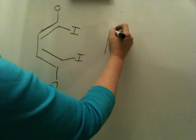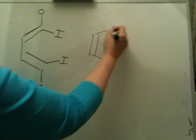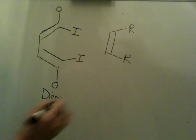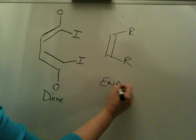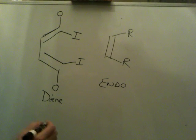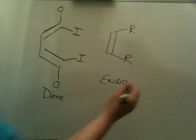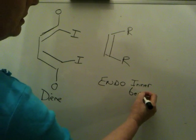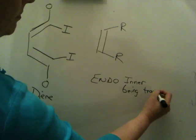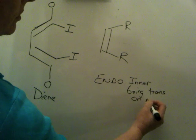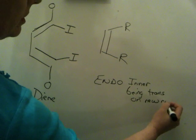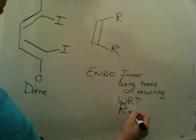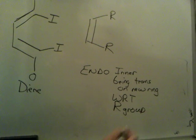The dienophile has some kind of substituents on it. The way the endo product is defined, it can be defined two ways. The endo product in Diels-Alder can be defined as the inner positions being trans on the new ring with respect to the R groups.